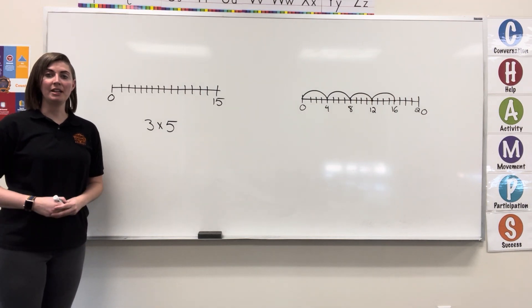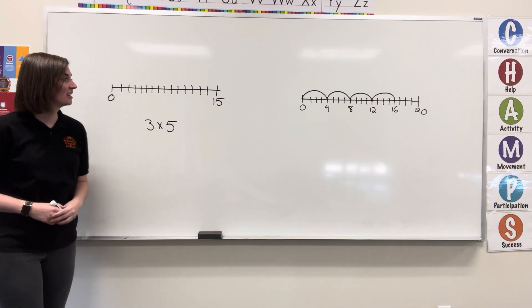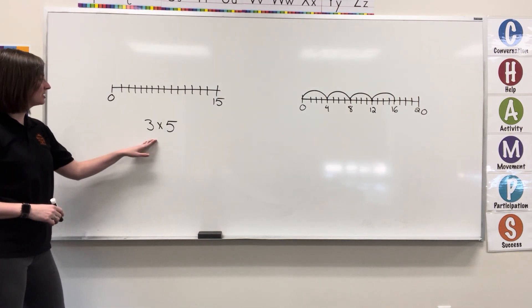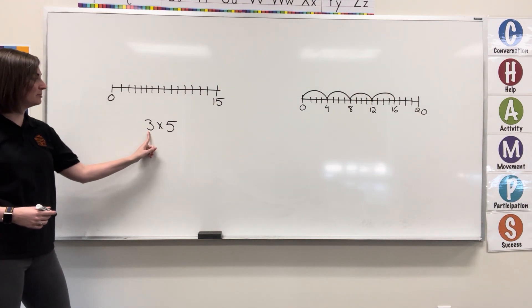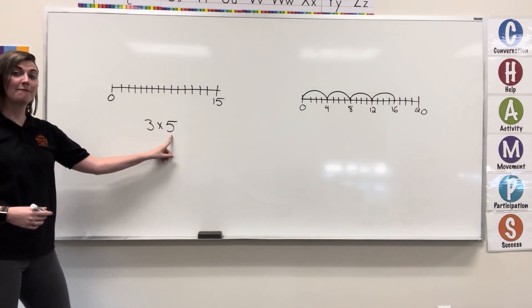In this video we're going to be using number lines to help us solve multiplication expressions. Our first expression is 3 times 5. This is telling us that we're going to jump 3 times while counting by 5.